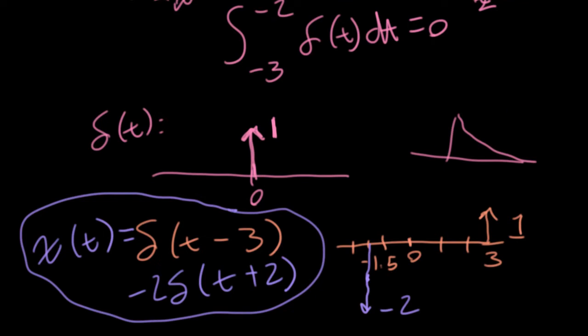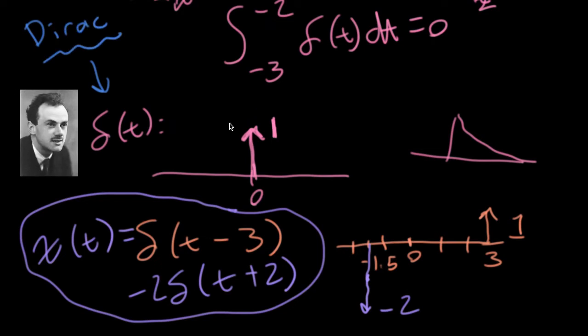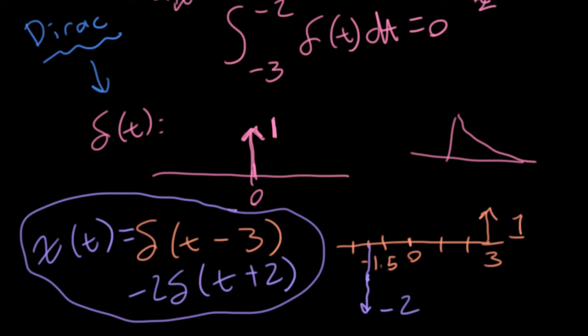This kind of delta function has a very particular name. This is the Dirac delta function, named for the physicist Dirac who did physics-y stuff. Occasionally, you might hear me accidentally call the discrete time delta function the Dirac delta function, but that's not true. The term Dirac really refers to this continuous time version.